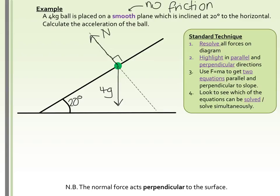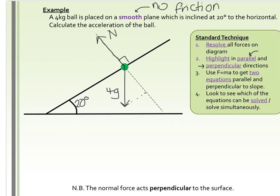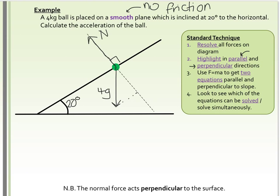We've drawn our forces on so far, and now we need to resolve them. The standard technique this time is to go in the parallel and perpendicular directions to the slope. Parallel to the slope, the weight would have a component going in that direction. We also consider which way the arrows go on those components — gravity forces the ball downwards, so the individual component arrows must force it in the same direction. That gives us our perpendicular and parallel components. Now we go to stage 2: highlighting our parallel and perpendicular components.